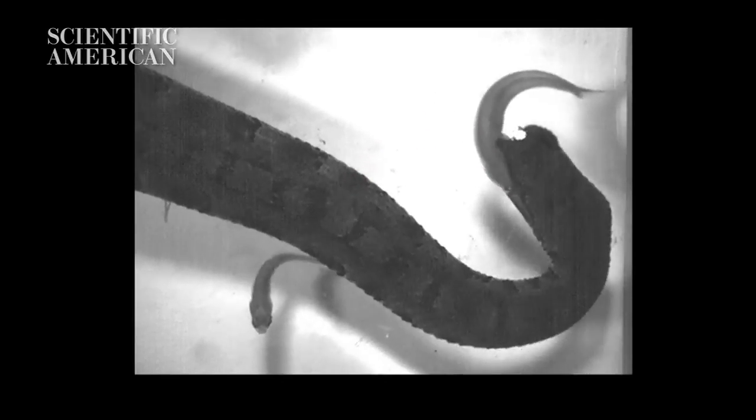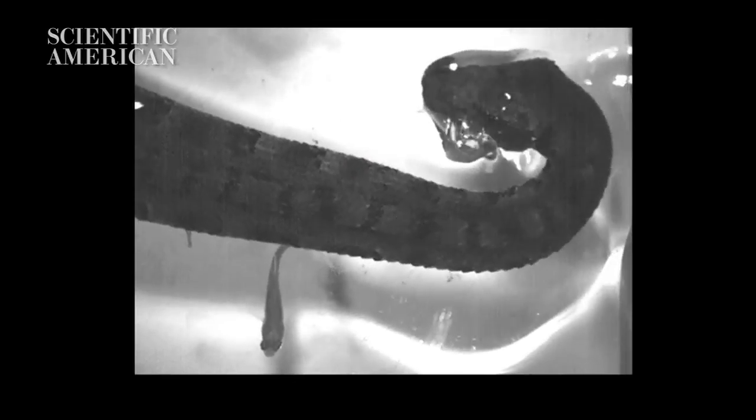It uses a quick flick of its body to startle the fish, corralling it toward its head and into its mouth.